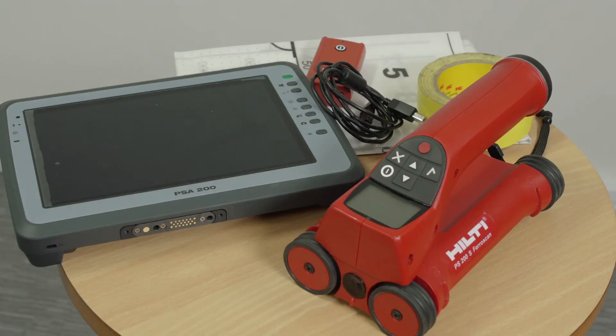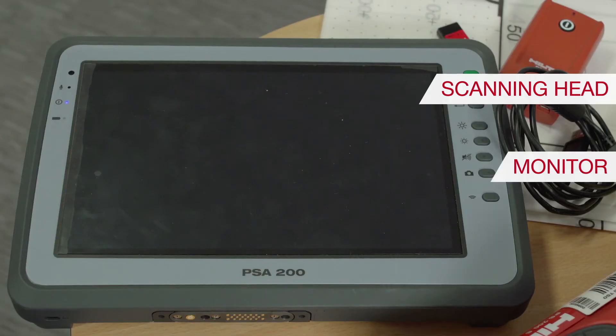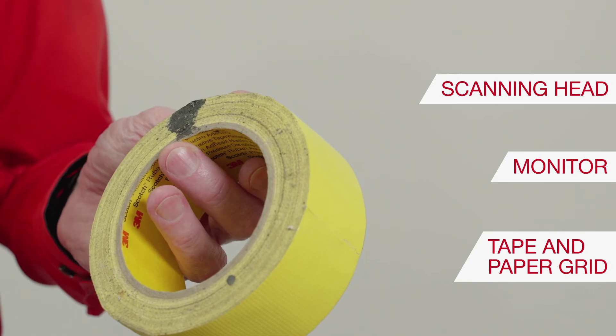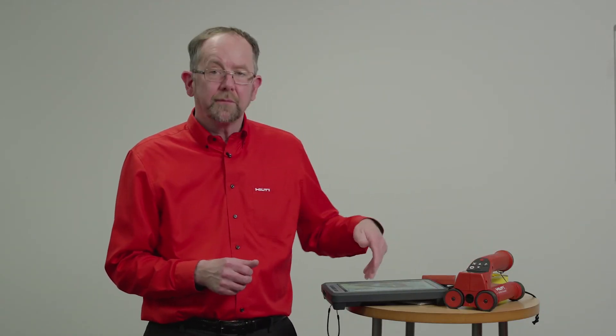We're going to talk about the PSA 250 Ferroscan system now and the components for that system that you require on site. These components comprise the scanning head, the monitor, tape and grid as per the previous system, and a way of transferring data from the scanning head to the monitor.